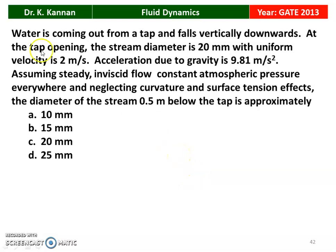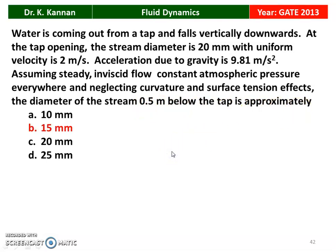Next question from the 2013 question paper. Water is coming out from a tap and falls vertically downward. At the tap opening, the stream diameter is 20 mm with a uniform velocity of 2 m/s. Acceleration due to gravity is 9.81 m/s². Assuming steady, inviscid flow, constant atmospheric pressure everywhere, and neglecting curvature and surface tension effects, the diameter of the stream 0.5 m below the tap is approximately 15 mm.